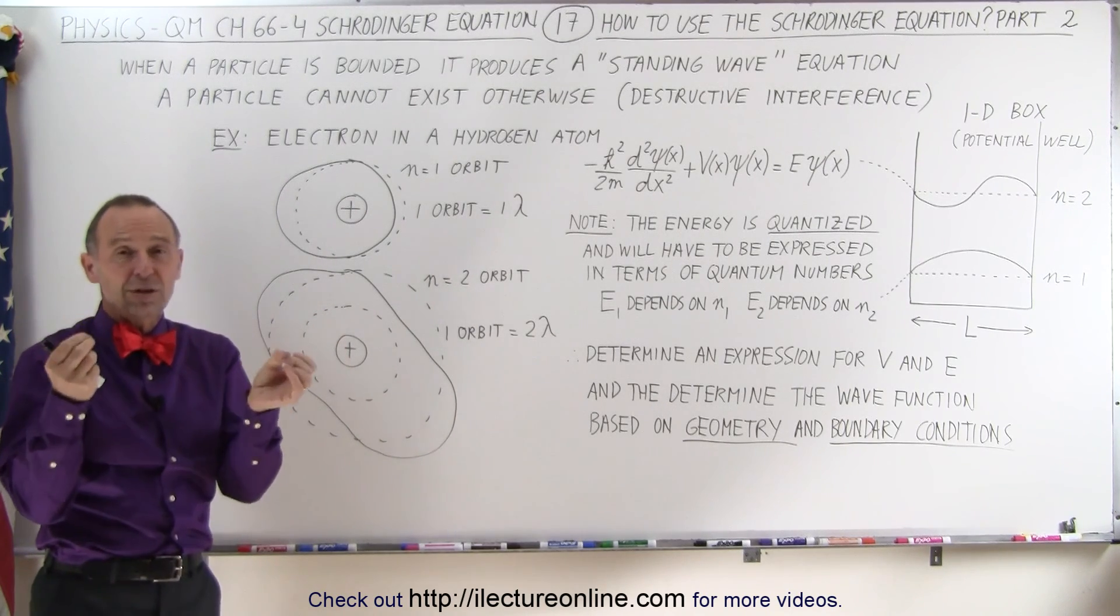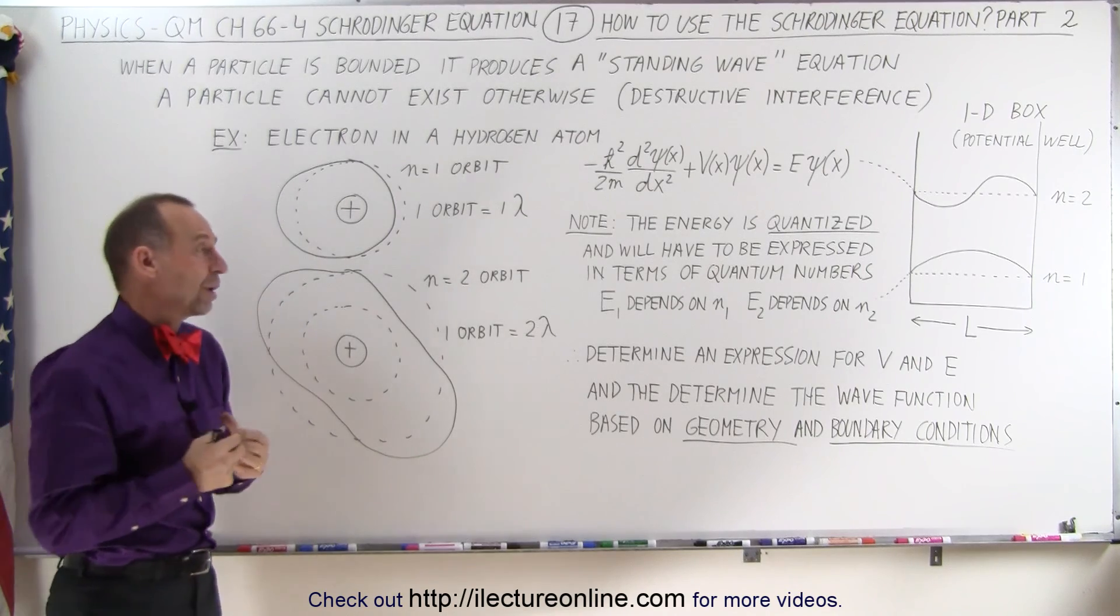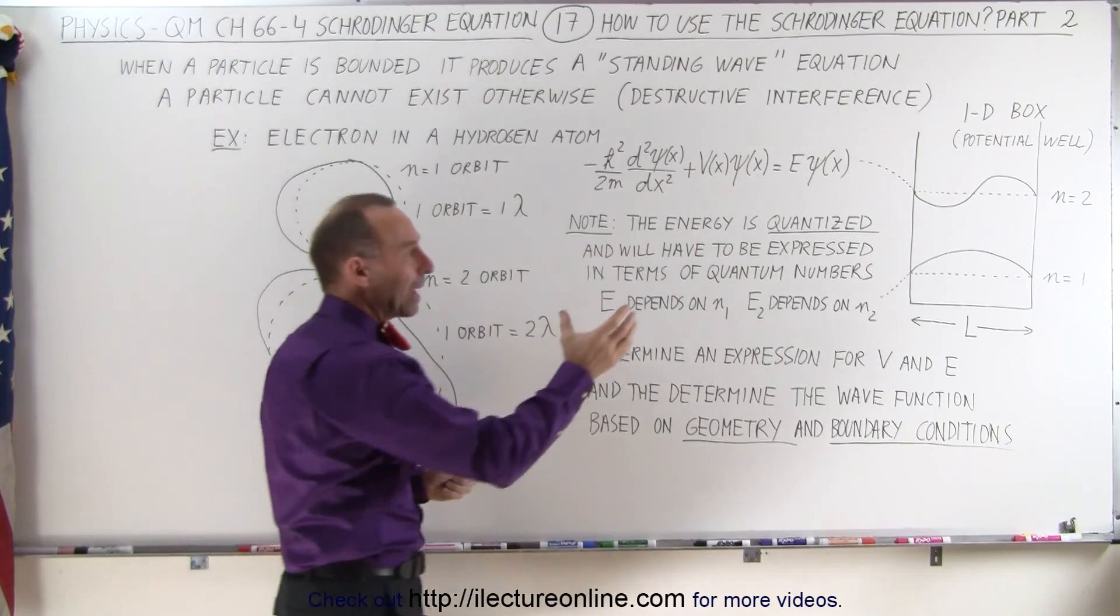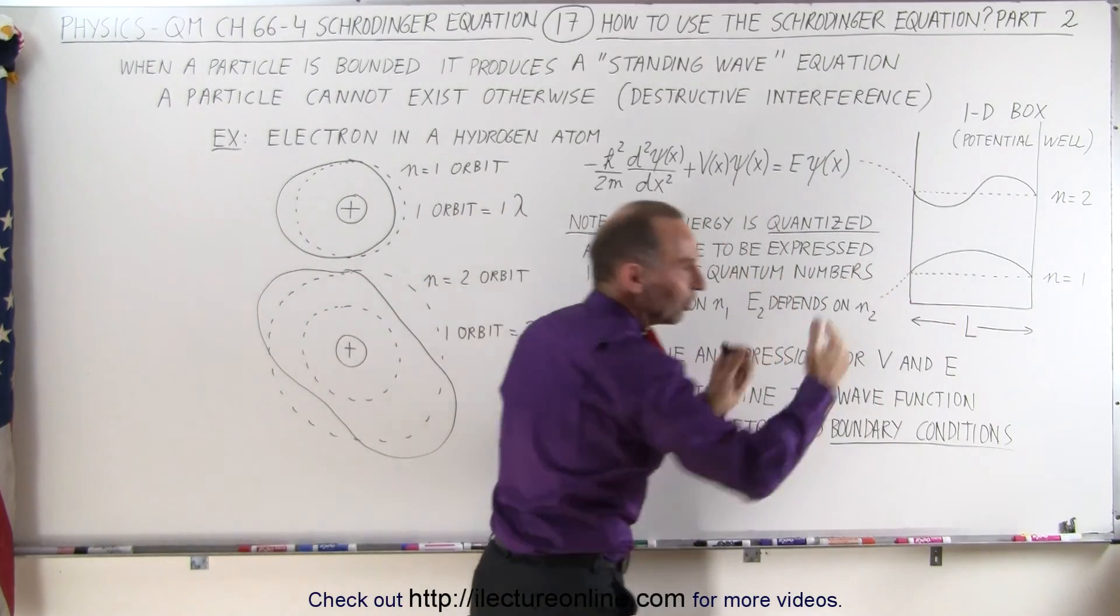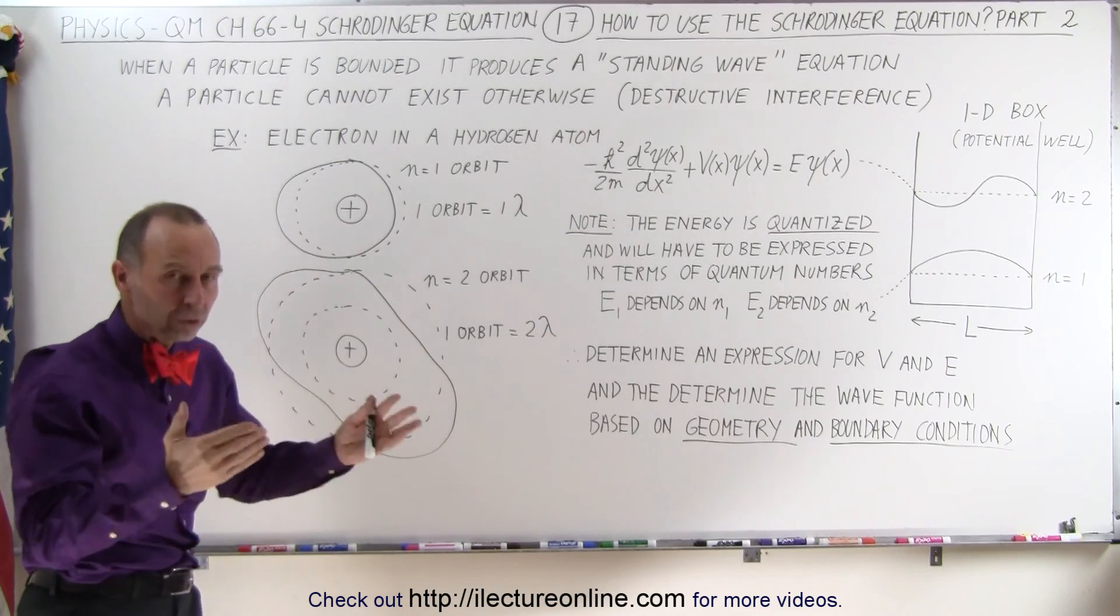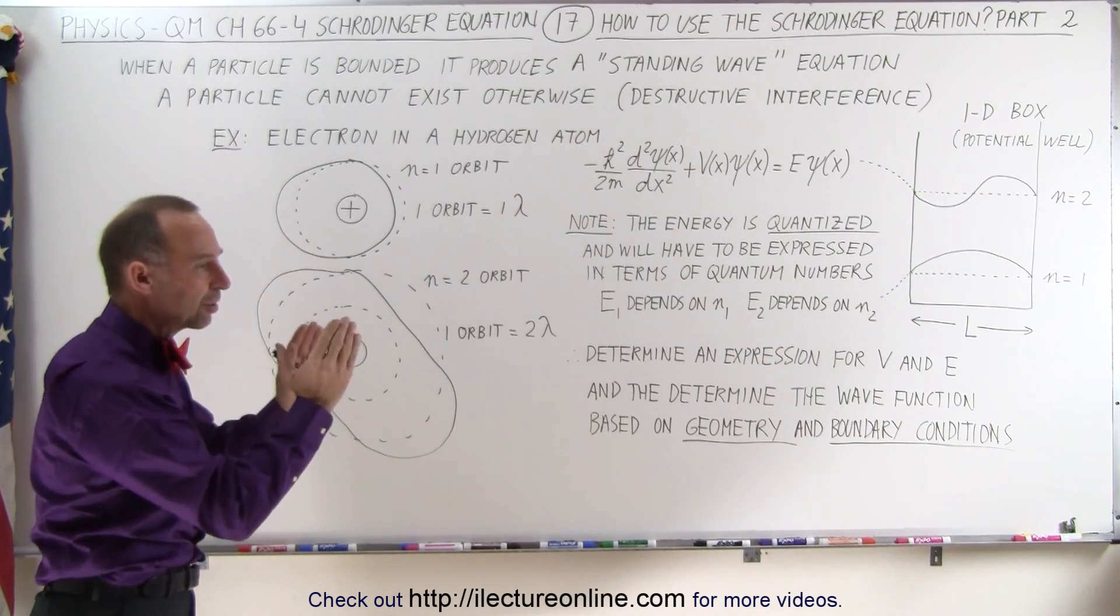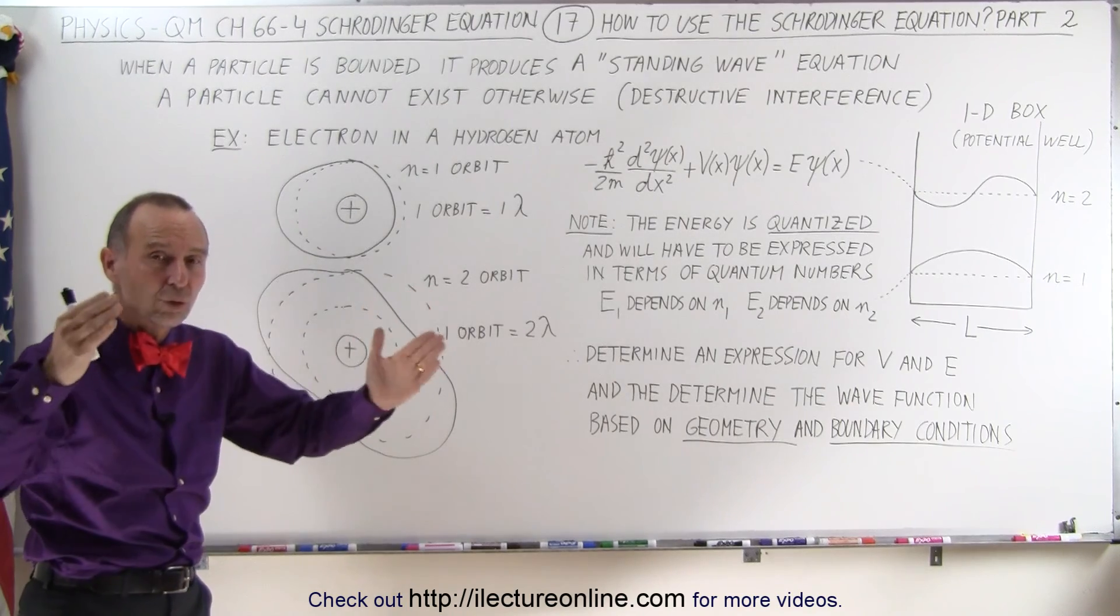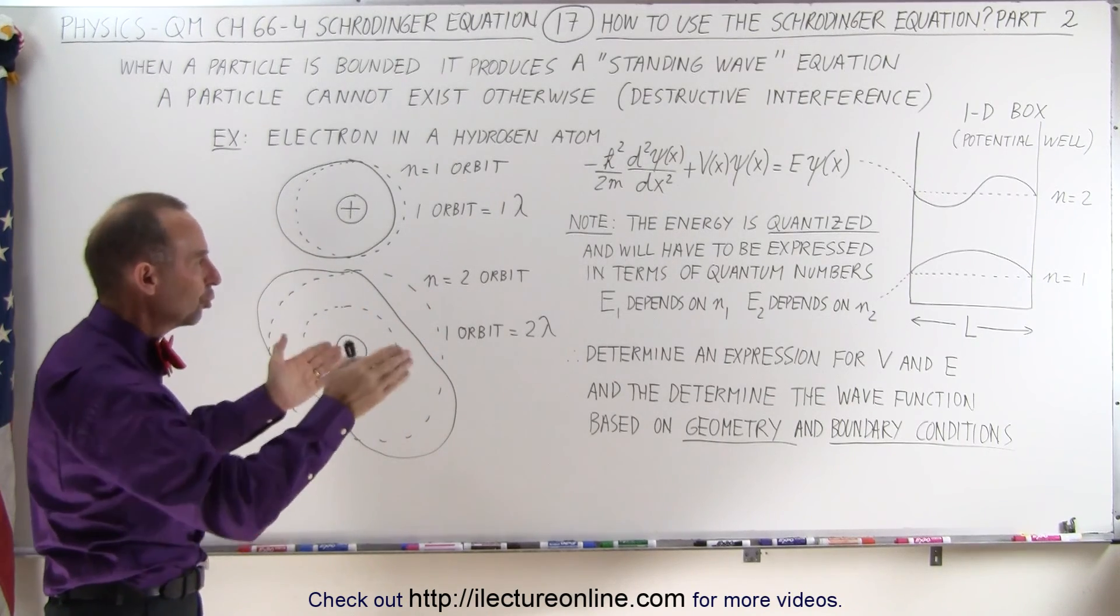Now particles end up typically being in real-life situations. For example, they can be bounded in orbits of atoms, they can be bounded by some physical dimensions, typically some potential energy or some voltages that keeps particles in a particular location and allows particles to move between two limiting areas.